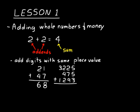Let's try another addition problem. Let's do this one on the board. Remember, all the problems I do, you should do on your paper. We have 3225 plus 475 plus 1293. It doesn't matter what order we put those numbers in - we could have put 475 first. The important thing is that we have the digits lined up and we add the digits with the same place value together.